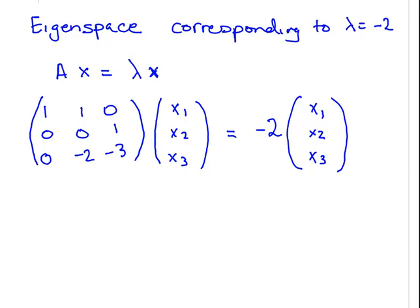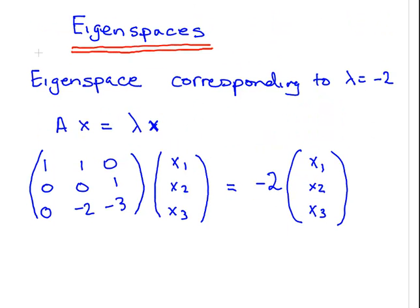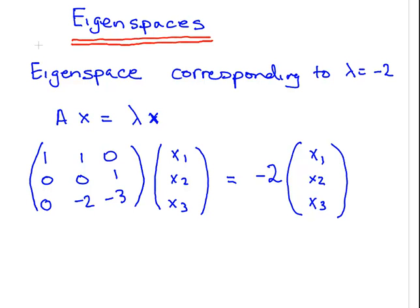Let's get cracking at that. The first case, find the eigenspace corresponding to lambda equals minus 2. So, this is A here, that's given in the question. And we found that one of the eigenvalues is minus 2.